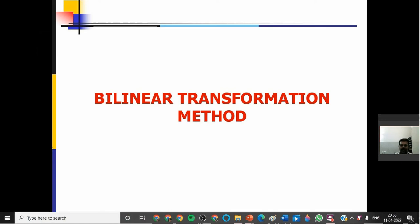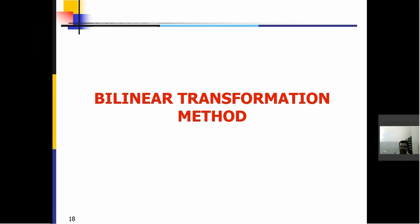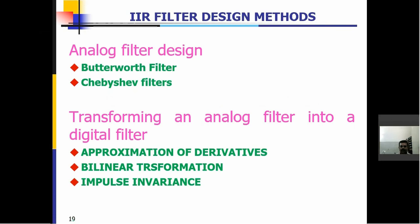We are going to see the bilinear transformation method. In analog filter design we have two types of filters: Butterworth filter and Chebyshev filter. For transforming an analog filter into a digital filter, we have three methods: approximation of derivatives, bilinear transformation, and impulse invariance method.